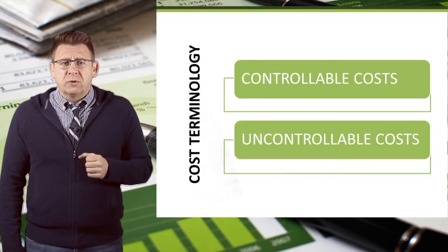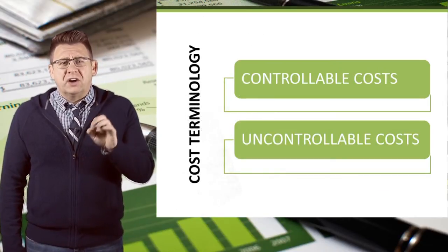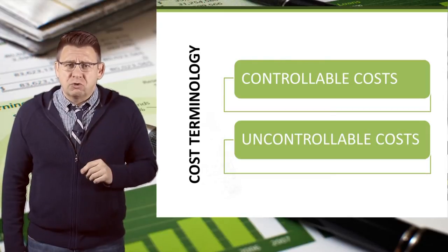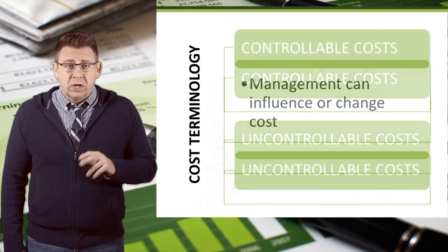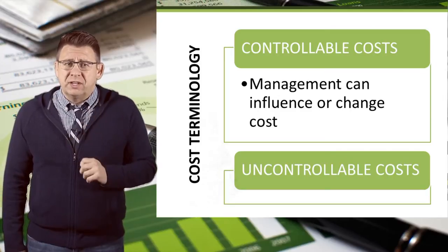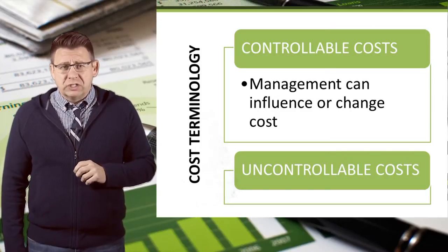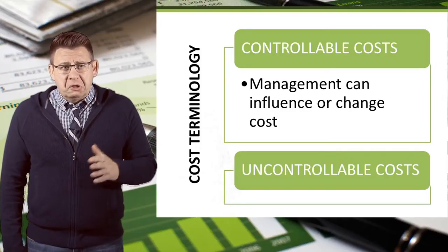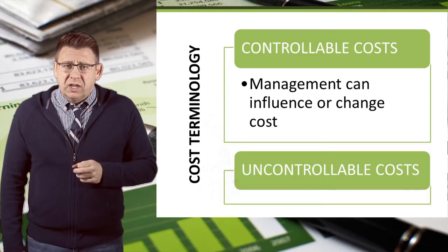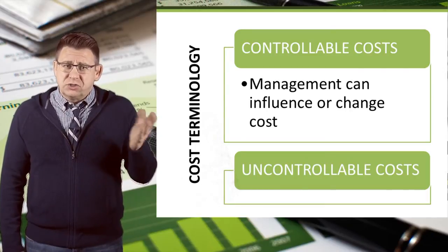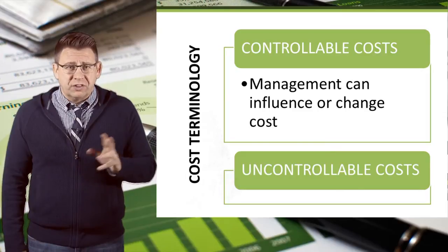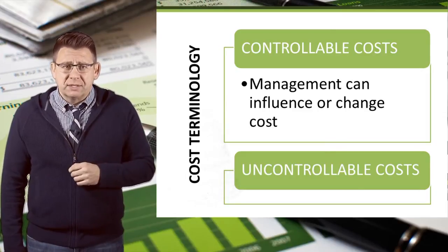The first two terms we need to understand are controllable versus uncontrollable costs. Controllable costs are those costs which management can influence or change. An example is salary expense. If expenses are too high, management can reduce the workforce either through layoffs or pay cuts.